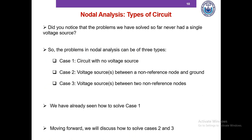The problems we've solved so far never had a voltage source. In nodal analysis, problems can be of three types: case one — circuit with no voltage source; case two — voltage source between a non-reference node and ground; case three — voltage source between two non-reference nodes. We've already seen how to solve case one; moving forward we'll discuss cases two and three.